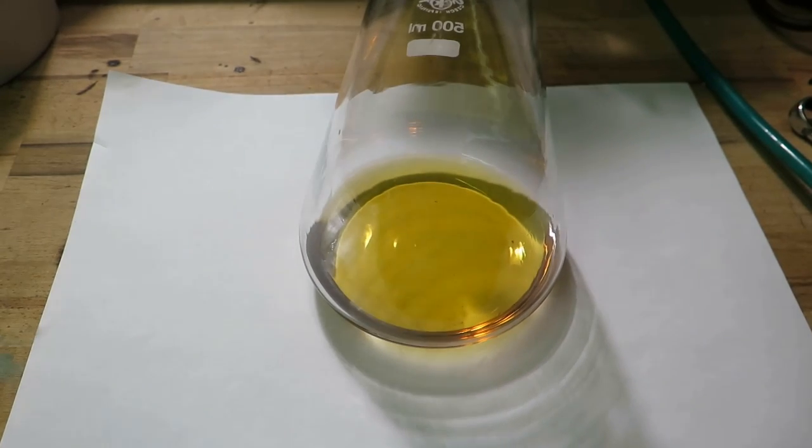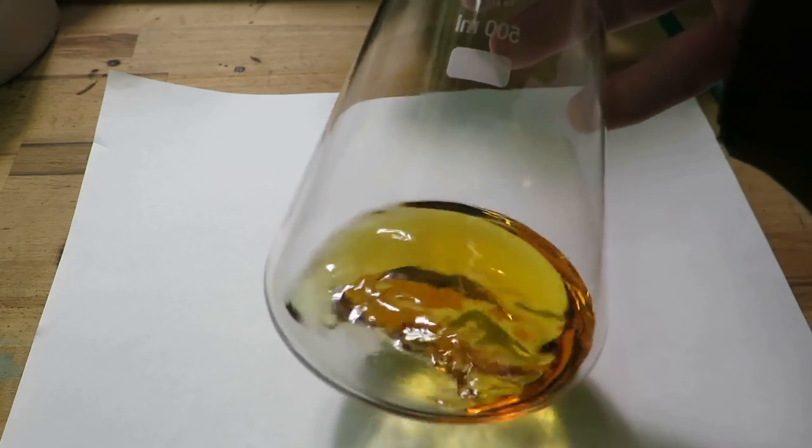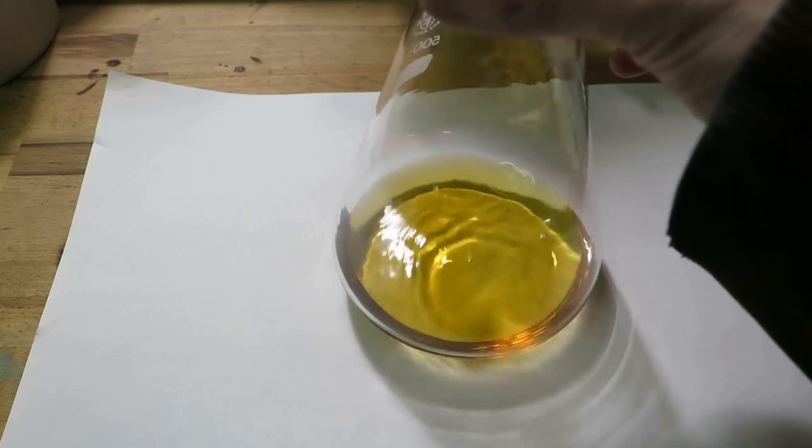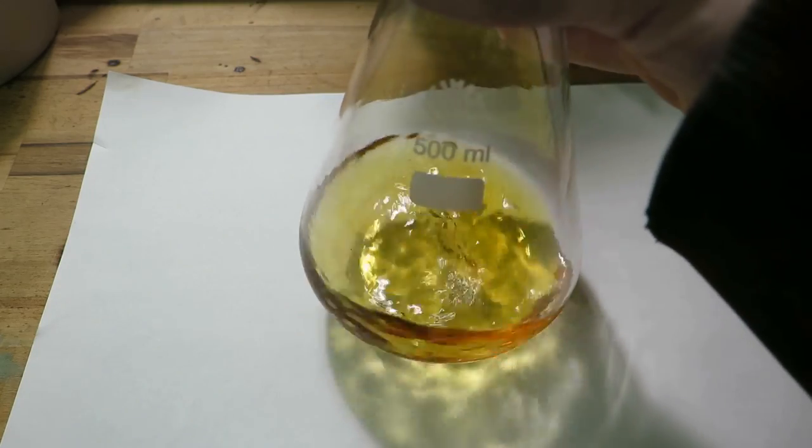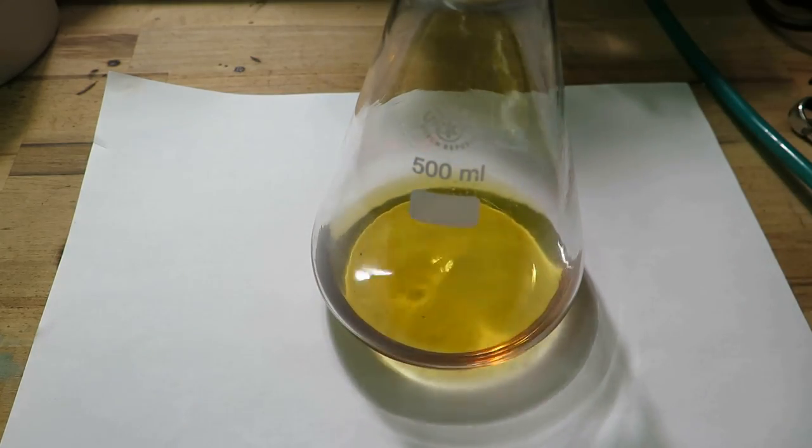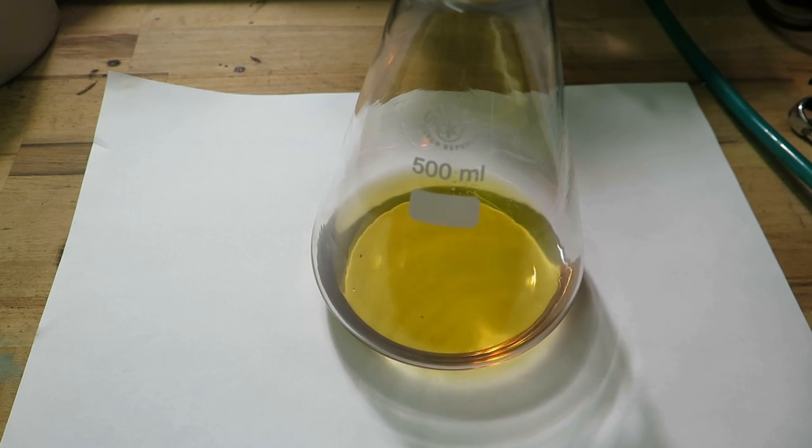So this is the liquid we have collected. There's nothing really special about it apart from the smell. It's bad. It smells like styrene but ramped up to 11. But obviously it's impure and yellow so we have to distill this.